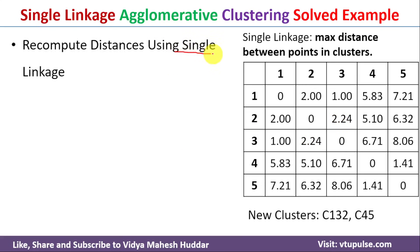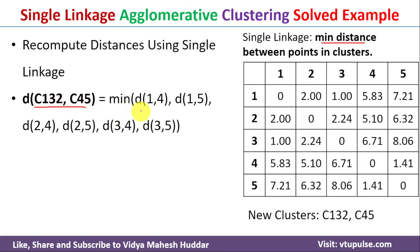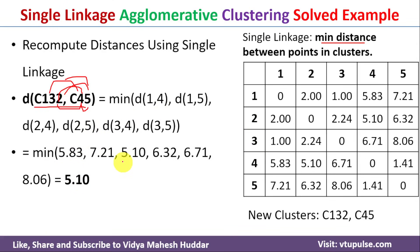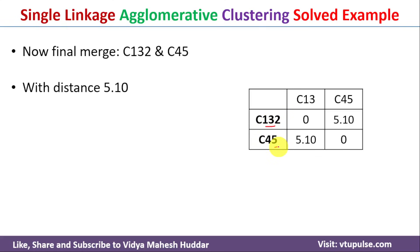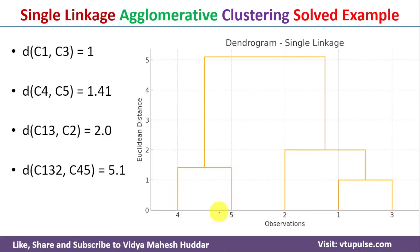We recompute the distance using single linkage between clusters C132 and C45. The distance equals the minimum among distances (1,4), (1,5), (3,4), (3,5), (2,4), and (2,5). The minimum distance is 5.10, so the distance between C132 and C45 is 5.10. We update the table, and finally merge C132 and C45 with distance 5.10, forming the final cluster C13245.